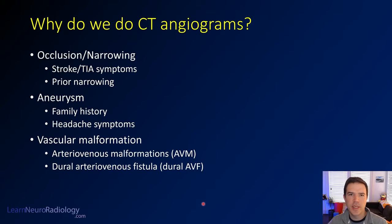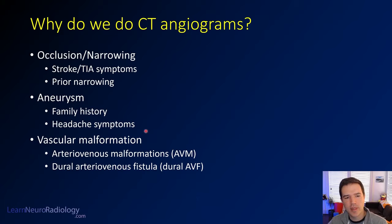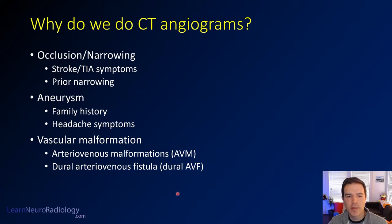Why do we do CT angiograms? Most of the time we're doing them to look for occlusion or narrowing of the vessels, to evaluate for stroke or TIA symptoms, or to evaluate areas of narrowing that are already known. Sometimes people have aneurysms or a history of headache and we're looking for aneurysms. Sometimes we're also looking for vascular malformations or other vascular anomalies such as dural AV fistulas.